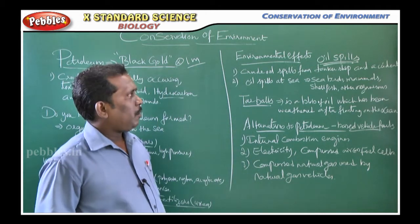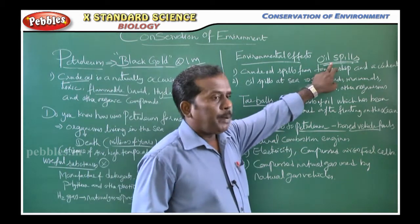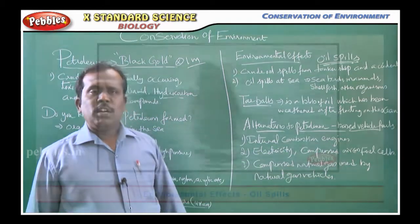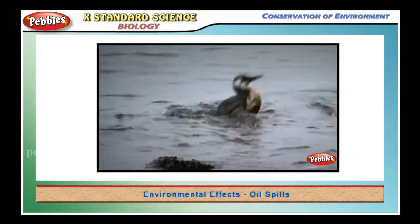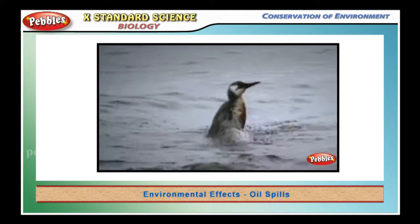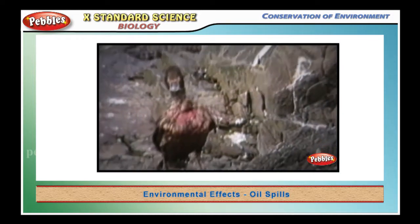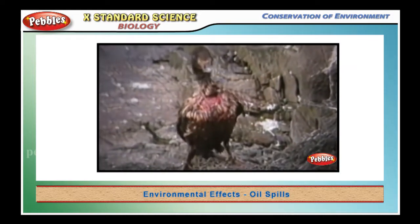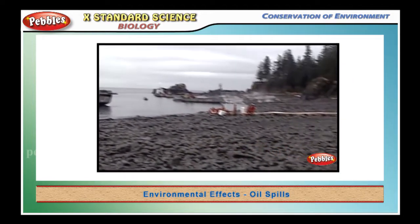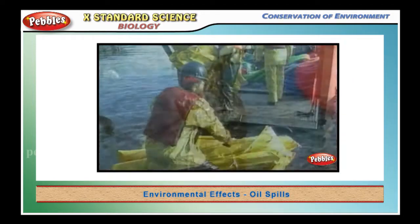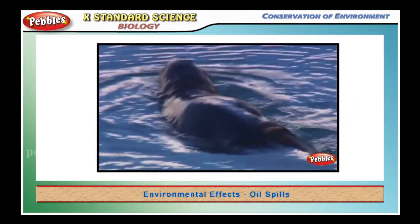Petrol product. First, we discussed oil spills. Even in exams, they asked: write a note on oil spills. Oil spills means the crude oil spills from tanker ships and accidents. It naturally affects the aquatic ecosystem.